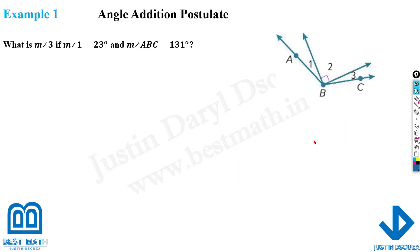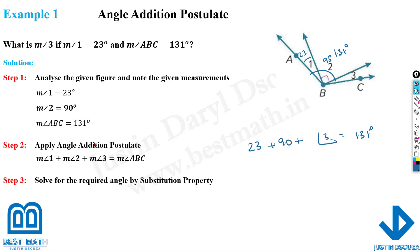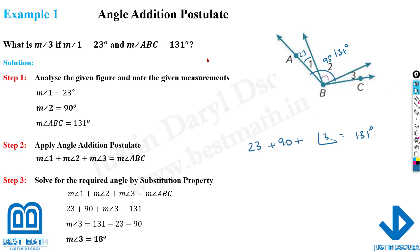Let's look into the other problems here. They have told us to find the measure of angle 3, and measure of angle 1 is given — this is 90 degrees. Please remember, they have not told it's supplementary or anything; they have given us ABC, and this total opening is 131 degrees. So: 23 degrees plus 90 degrees plus the unknown angle C, which we are solving, will equal 131. Or 131 minus 90 minus 23 would be the answer — that's the angle addition postulate. By substitution we get the angle. The answer is 18 degrees — that's the measure of angle 3.